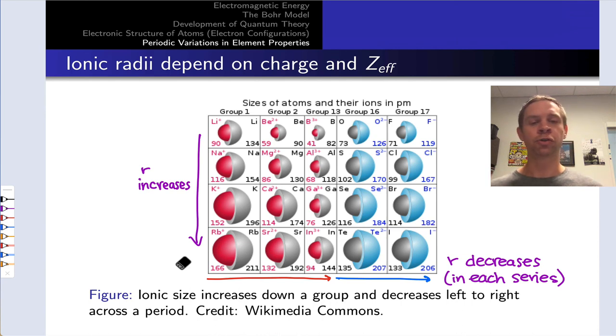Charge will increase in magnitude as we move to the right starting from group one to group two to group 13, looking only at the main group here. So size will decrease due to the increasing charge. When we get to group 16, we're onto anions. And so charge will decrease in magnitude moving left to right, O2- to F-. Actually the trend here is consistent with the trend in cation radii. It decreases moving left to right.